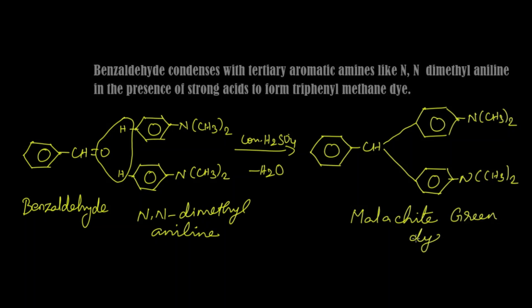To summarize: when benzaldehyde condenses with two molecules of N,N-dimethylaniline in presence of sulfuric acid, we get a condensed product which is called triphenylmethane dye — commercially it is called malachite green dye.